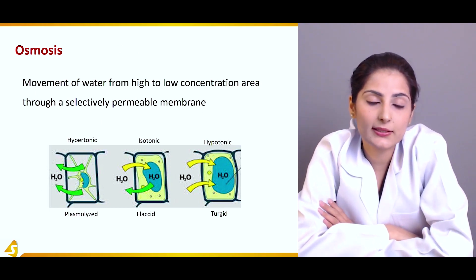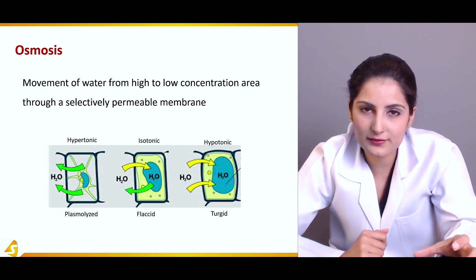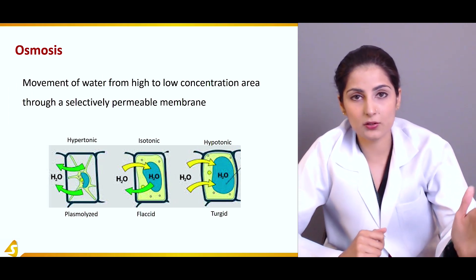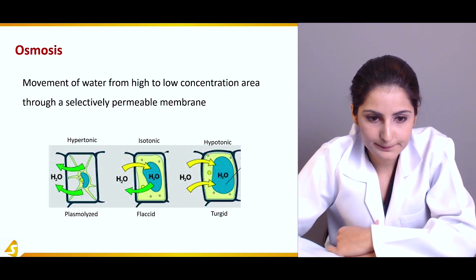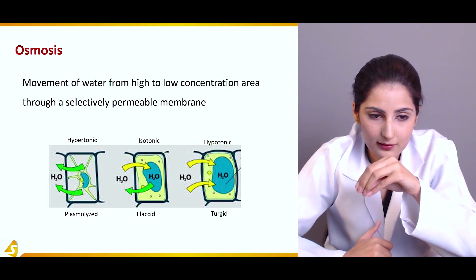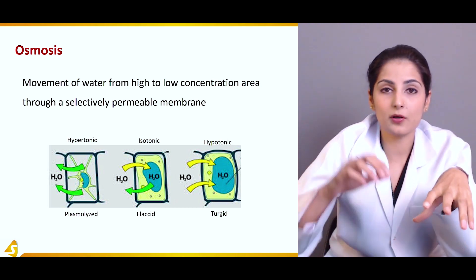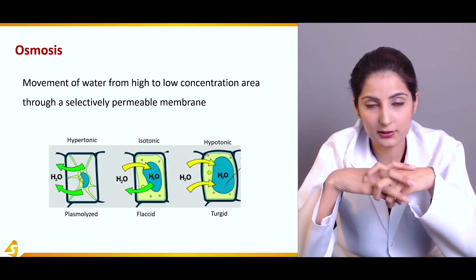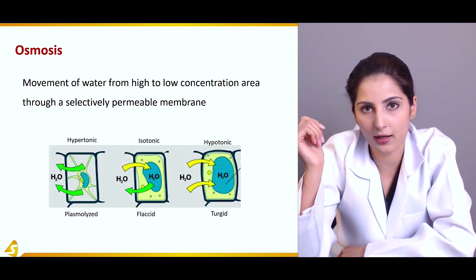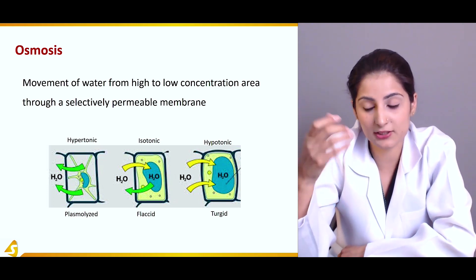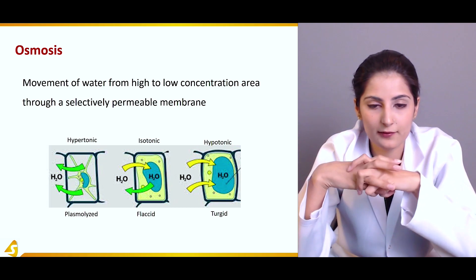Osmosis is a type of simple diffusion, but this term is used exclusively for water molecules — how water moves from an area of high concentration to an area of low concentration. Examples include roots taking up water from the soil through osmosis — the root acts as a semi-permeable membrane. Similarly, a glass of water hydrates our whole body through osmosis. These are the simplest examples occurring in our daily life.